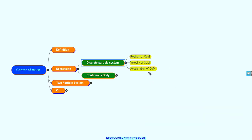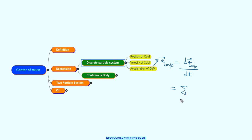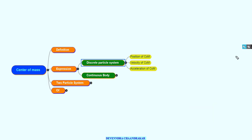The acceleration of center of mass, a_cm with respect to O, is the rate of change of velocity of the center of mass — that is, dv_cm/dt. This equals (Σ mi·ai) / (Σ mi) for i = 1 to N.